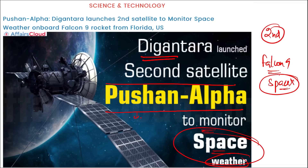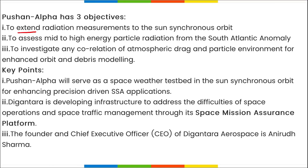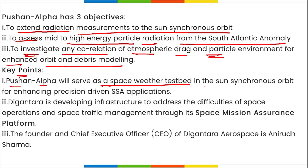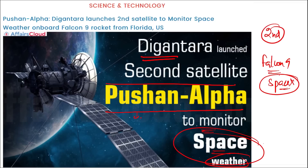Pushan Alpha has three objectives: (1) to extend radiation measurements to the sun-synchronous orbit, (2) to assess mid-to-high energy particle radiation from the South Atlantic Anomaly, and (3) to investigate any correlation of atmospheric drag and particle environment for enhanced orbit and debris modeling. It will serve as a space weather testbed in the sun-synchronous orbit for enhancing SSA applications — monitoring solar flares, radiation, and their effect on Earth.